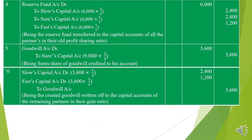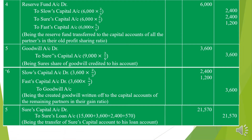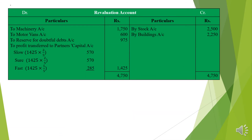For goodwill: the firm's total goodwill is 9,000. Sure's share = 9,000 × 2/5 = 3,600, credited to his account per the old profit sharing ratio. Since goodwill is written off, Slow's and Fast's capital accounts are debited and goodwill account is credited in the ratio 2:1 — giving 2,400 and 1,200 respectively, totaling 3,600. Sure's capital account balance totals 21,570, which is transferred to Sure's Loan Account.